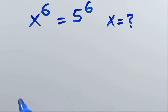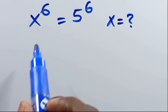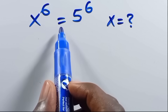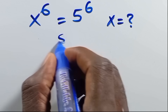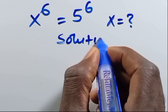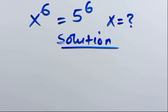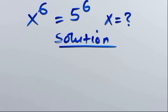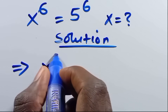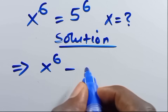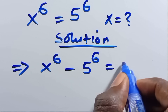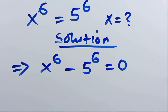What is the value of x, given that x to the power of 6 equals 5 to the power of 6? So from here, let's rewrite it as x to the power of 6 minus 5 to the power of 6 equals 0.